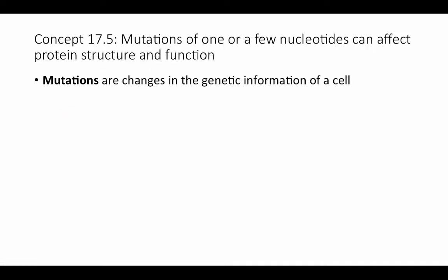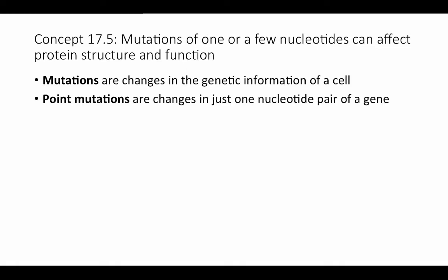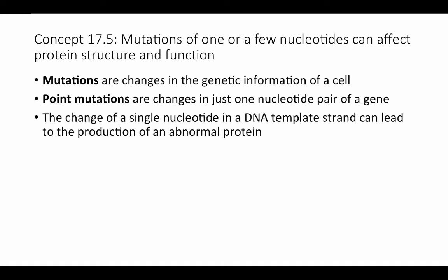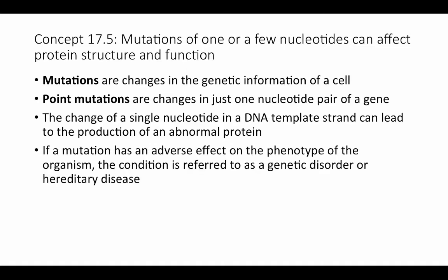Through the whole process of DNA synthesis, things can go wrong — mutations can occur that change the genetic information of a cell. Any change to the DNA sequence in a cell is called a mutation. The simplest is called a point mutation — changes in just one nucleotide pair in a gene. The change of a single nucleotide in a DNA template strand can lead to the production of an abnormal protein, and when this adversely affects the phenotype, the condition is referred to as a genetic disorder or hereditary disease.